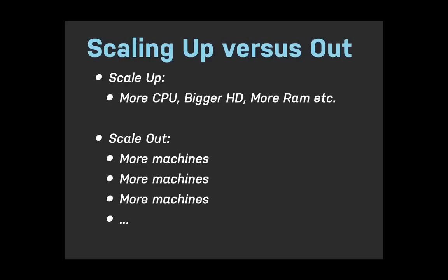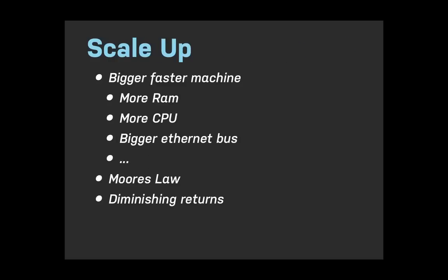If you want more speed from your database, there are two things you can do. You can scale up — increasing hardware: bigger hard drive, more RAM, moving your database closer to your web servers. You can also scale out — adding more machines. Scaling up is unfortunately bound by Moore's Law: we can only fit so many transistors into one machine. The biggest fastest single computer is still not as fast as two of them together. Also, the newest hardware costs quite a bit with diminishing performance gains.